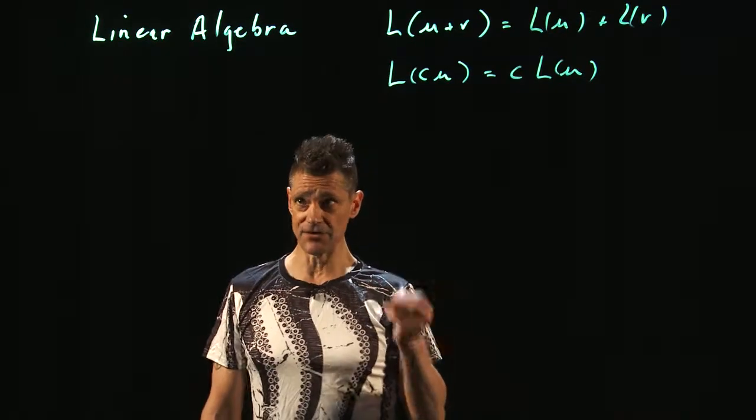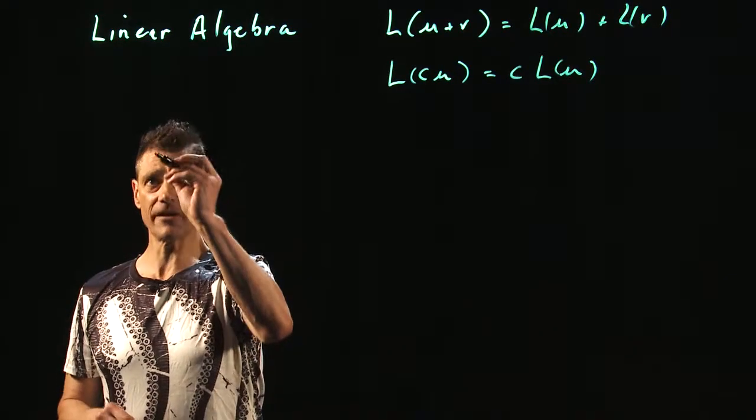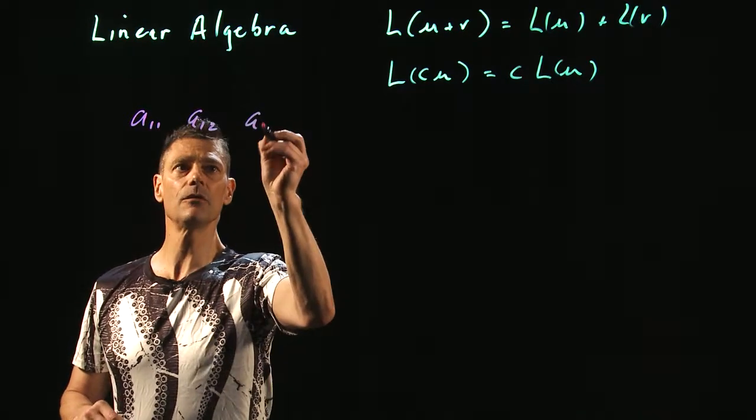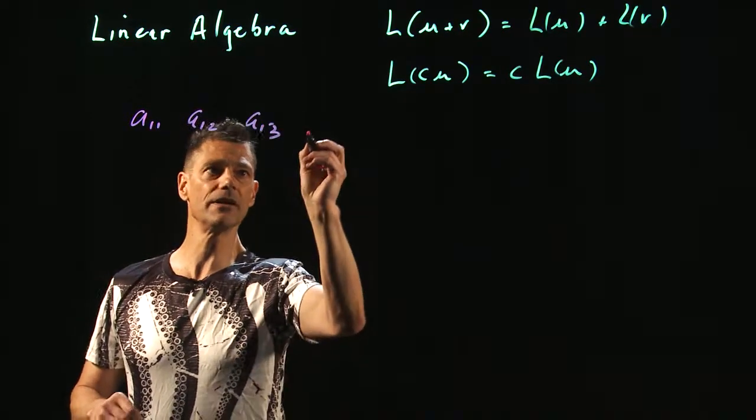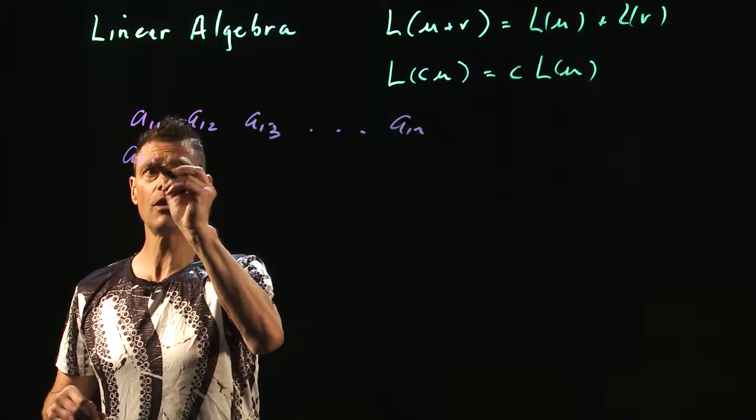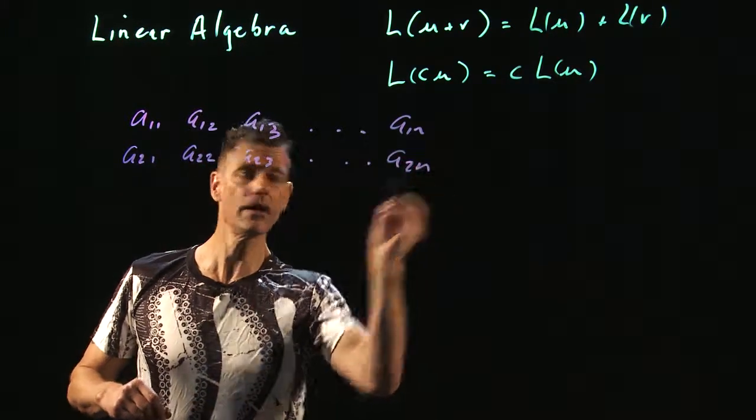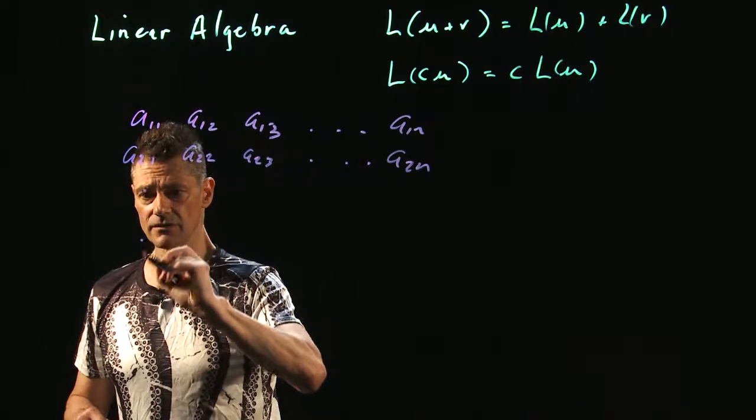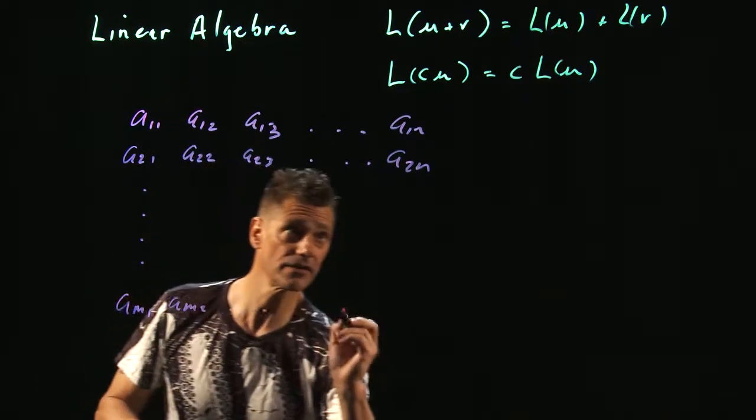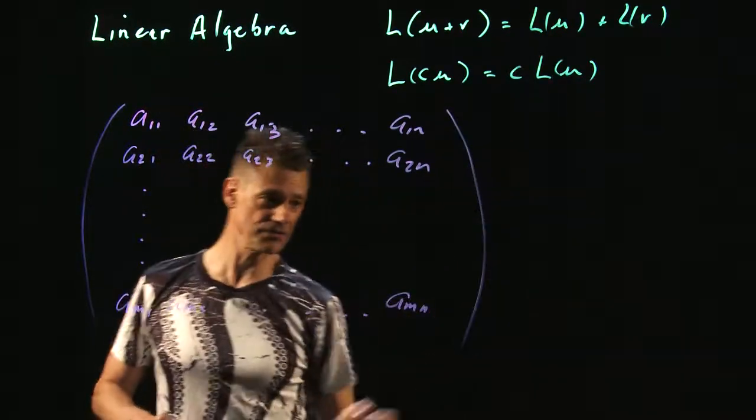Let's remember a matrix. A matrix, for the moment, is simply an array of numbers. A generic matrix looks like this: A11, A12, A13, dot dot dot, A1N. And then you'd go down, A21, A22, A23, dot dot dot, A2N. And then you're going down, down, down. And this is AM1, AM2, dot dot dot, AMN. This is a generic matrix.